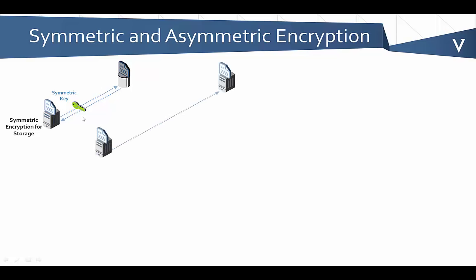Now let's look at communications, where one party on the left wants to send a secure message to a party on the right. In this particular case, using symmetric encryption, the party on the left will generate a symmetric key. And then they need to securely communicate that symmetric key to the other party, so that when they encrypt the message, the other party can decrypt it. So now we have secure communications between two parties. Obviously we still have the issue of keeping the key secret, but now we have two copies of keys that we need to keep secret, and we need to make sure that we keep the key secret as we're distributing it to the other party.